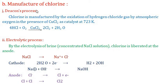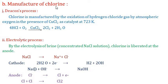Industrial manufacture of chlorine involves two methods. First is the Deacon's process: HCl reacts with oxygen in the presence of cupric chloride (CuCl2) as catalyst at 723 K to form chlorine gas and water. This is also an important method for the preparation of chlorine.